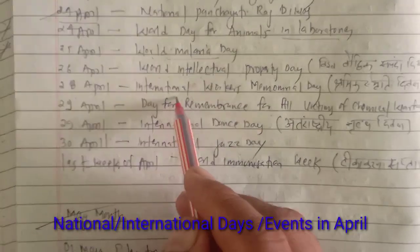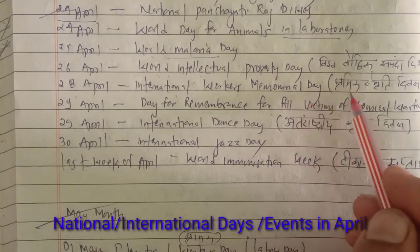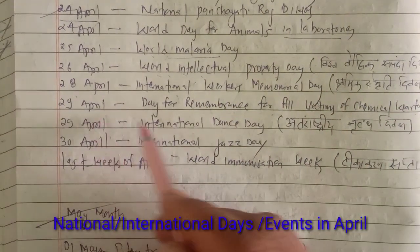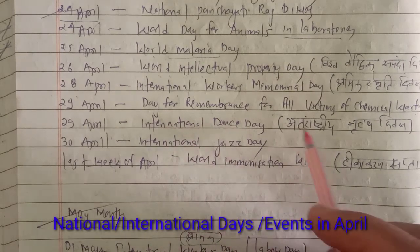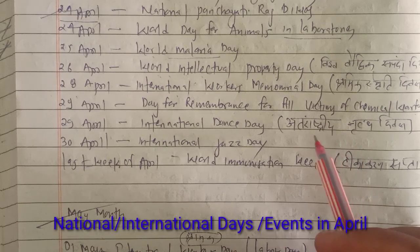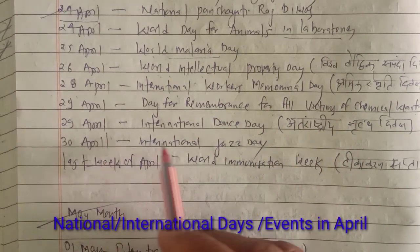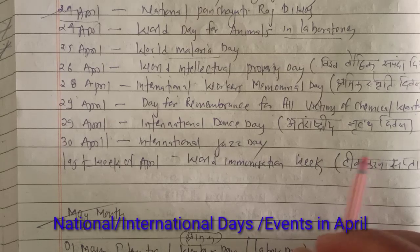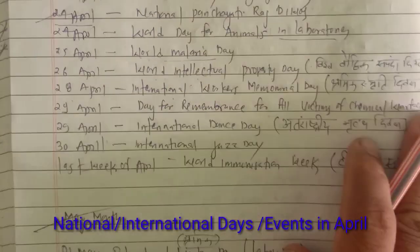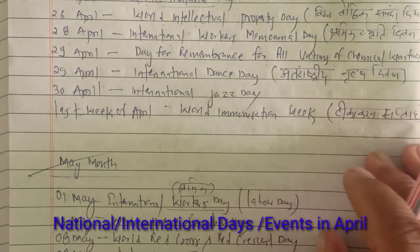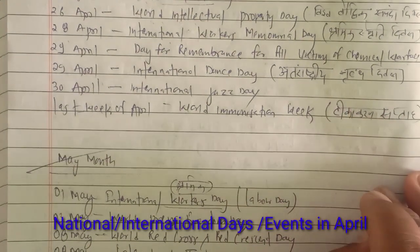28th April is International Workers Memorial Day, or Shroomik Srimiti Divas. 29th April is the Day of Remembrance for all Victims of Chemical Warfare, and also International Dance Day, known as Antarashtriya Nritya Divas. 30th April is International Jazz Day. The last week of April is World Immunization Week, or Tika Karan Saptah.